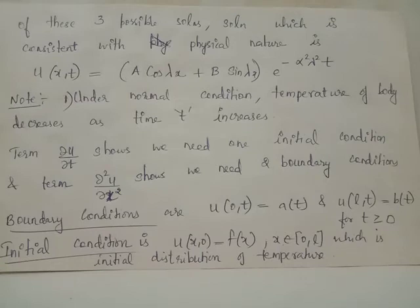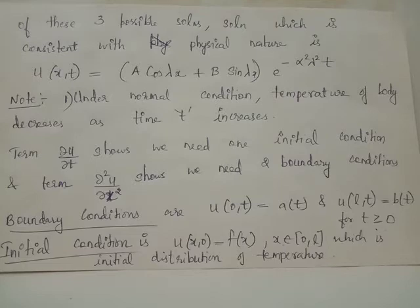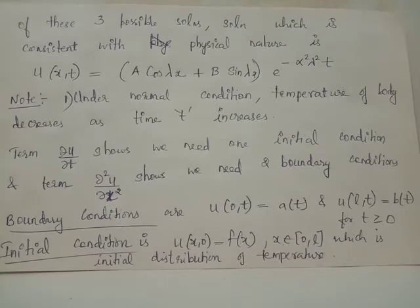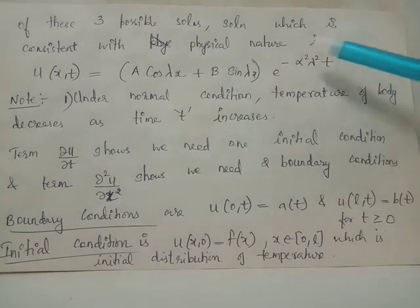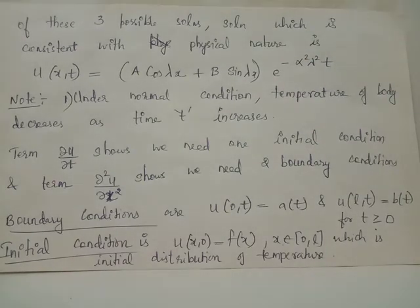Looking at the three possible solutions, we write the solution consistent with physical nature as u(x, t) = (A·cos(λx) + B·sin(λx)) · e^(−α²λ²t). The speciality of this solution is that it involves periodic functions. Also, under normal conditions, temperature distribution of a body is inversely proportional to time, and t occurs with a negative sign in the exponent. Thus the desired physical condition is satisfied, and this is selected as the most suitable solution.